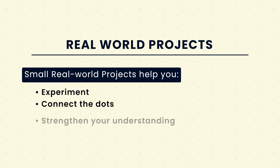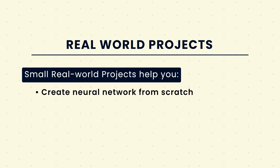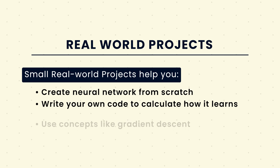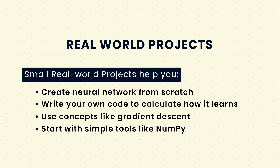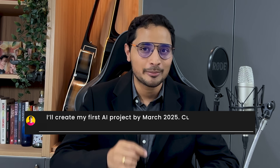If you take time to learn and understand these concepts and test them out with real-world projects, you'll be well on your way. Working on small projects is one of the best ways to practice and understand new concepts — it helps you experiment, connect the dots, and strengthen your understanding. If you're just starting, you can build a simple neural network using a library like TensorFlow or TensorFlow.js. If you want to go deeper, try creating a neural network from scratch, writing your own code to calculate how it learns using concepts like gradient descent, using tools like NumPy. Comment below a date by which you will complete your first AI project, and let me know which TLLC level you are at so I can make more videos specifically for you.